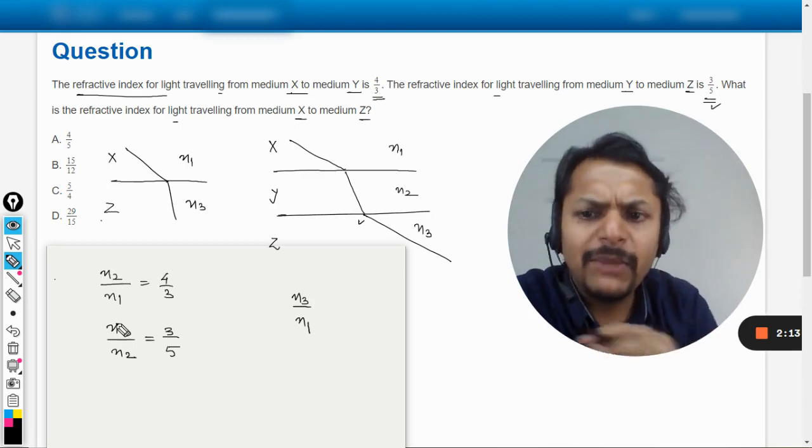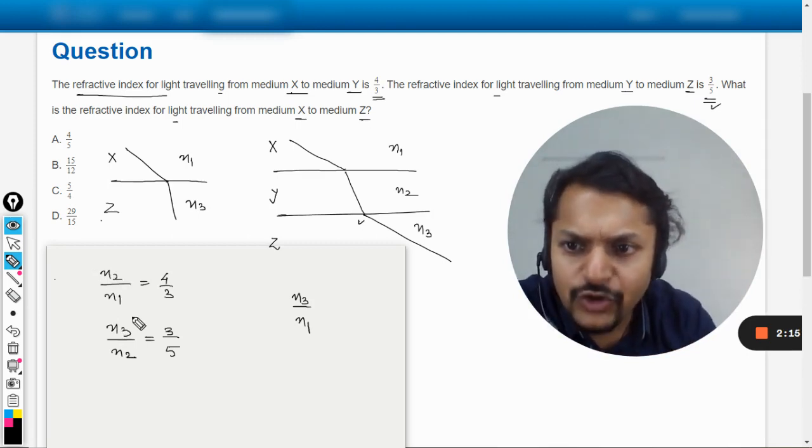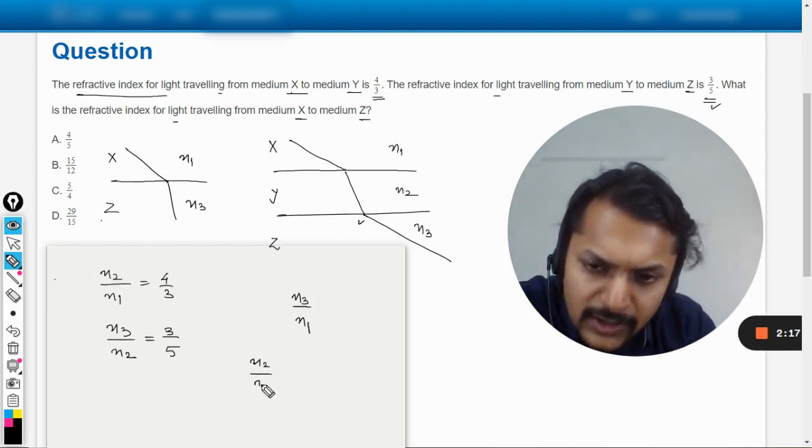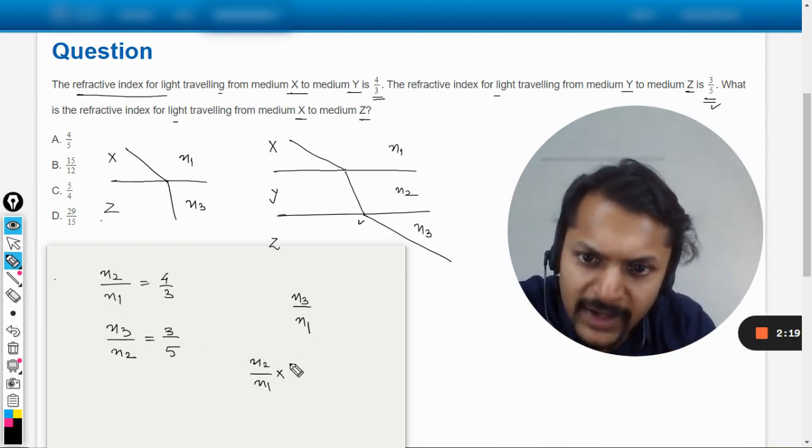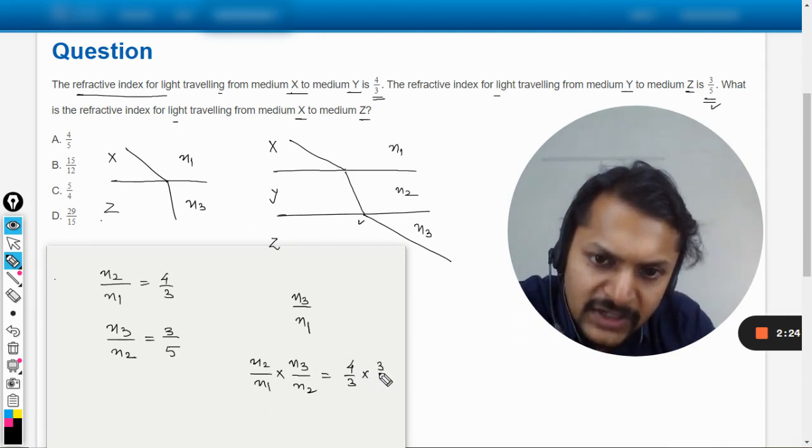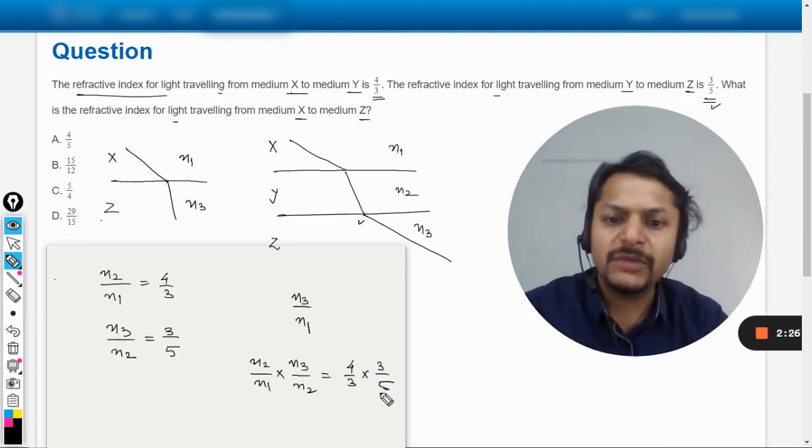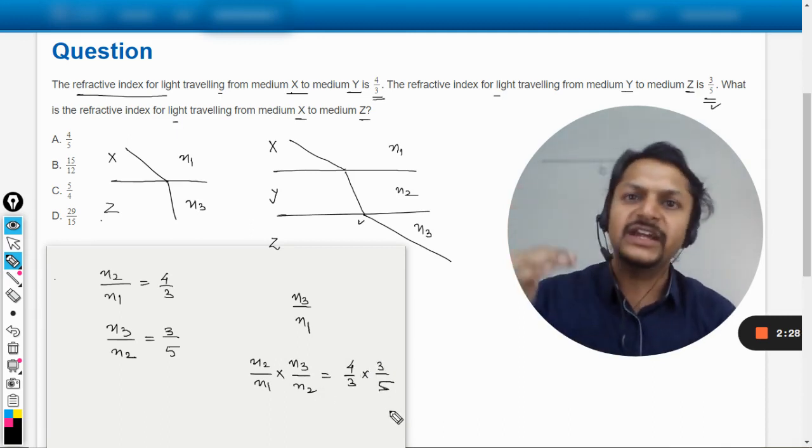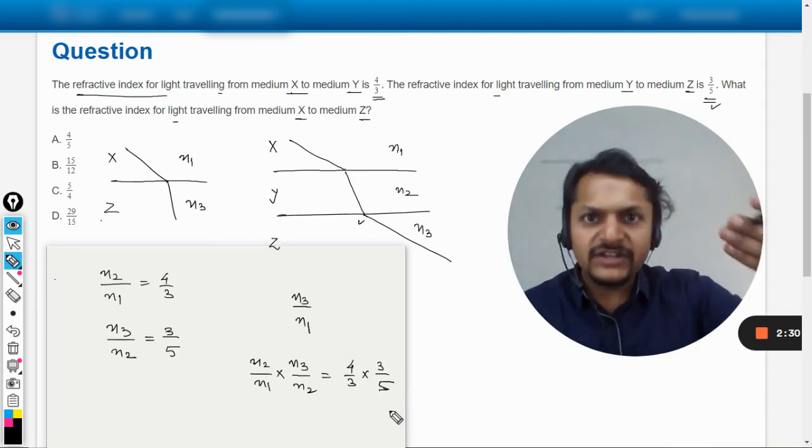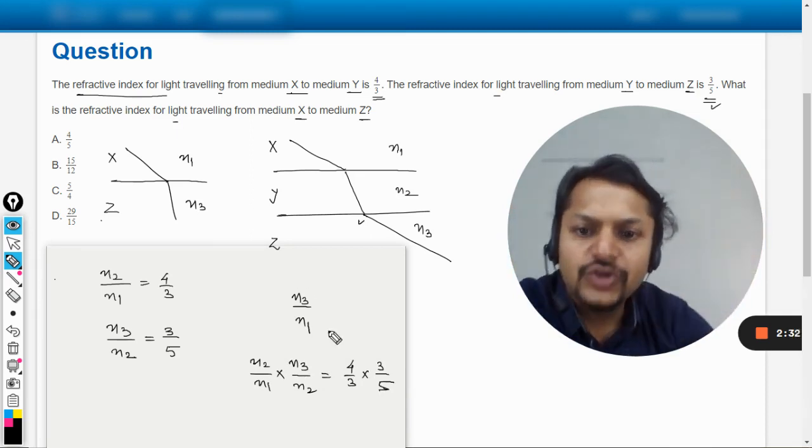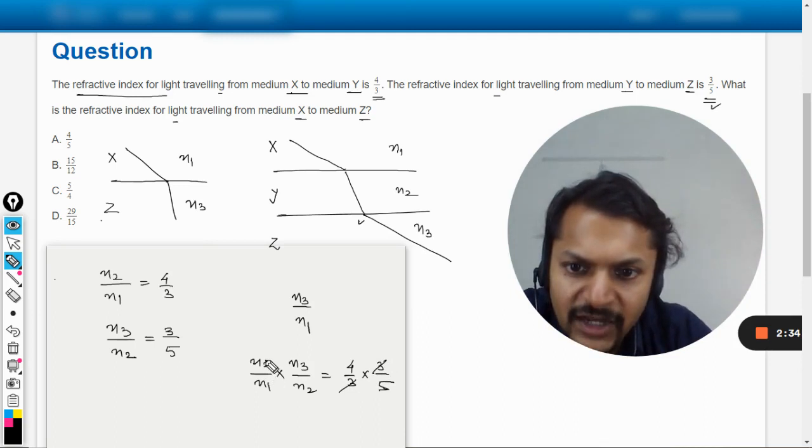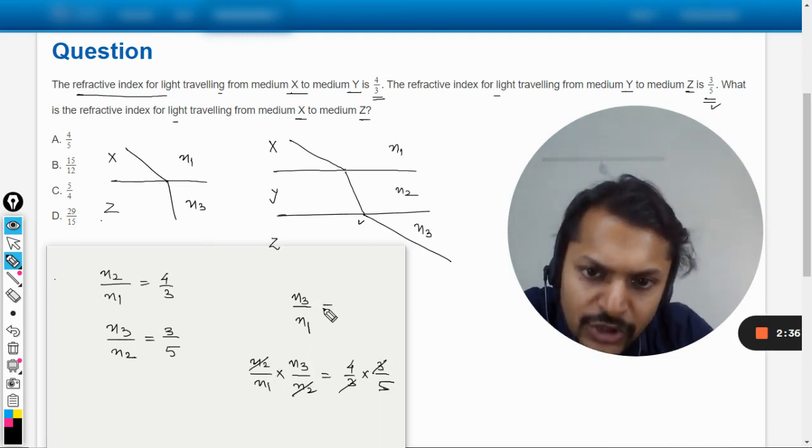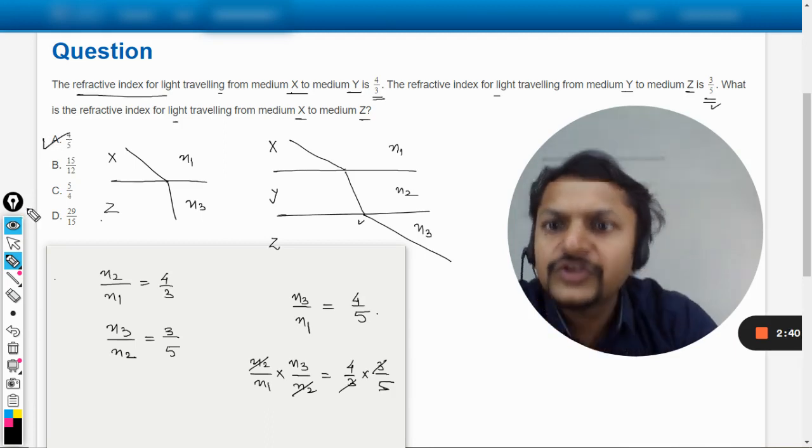Like n2 by n1 multiplied by n3 by n2 will be equal to 4 by 3 multiplied by 3 by 5. So I have just multiplied the equations. The right hand side is multiplied by right hand side, left hand side is multiplied by the left hand side. So overall, 3 and 3 gets cancelled out, n2 and n2 gets cancelled out, so our answer will come out to be 4 by 5.